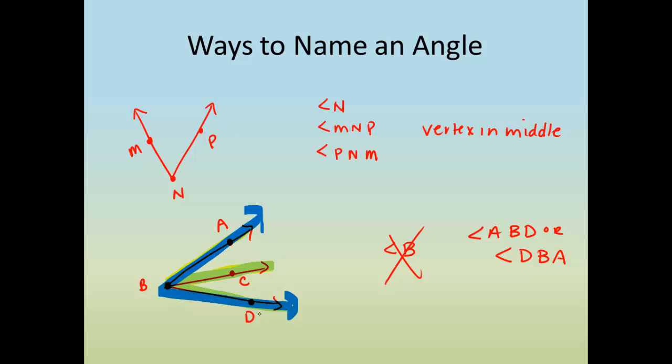What about this green angle we had here at the bottom? That would be named as angle CBD or angle DBC. Those are both correct for this small angle here at the bottom. But notice B is the center, the middle letter on all of my angle names.